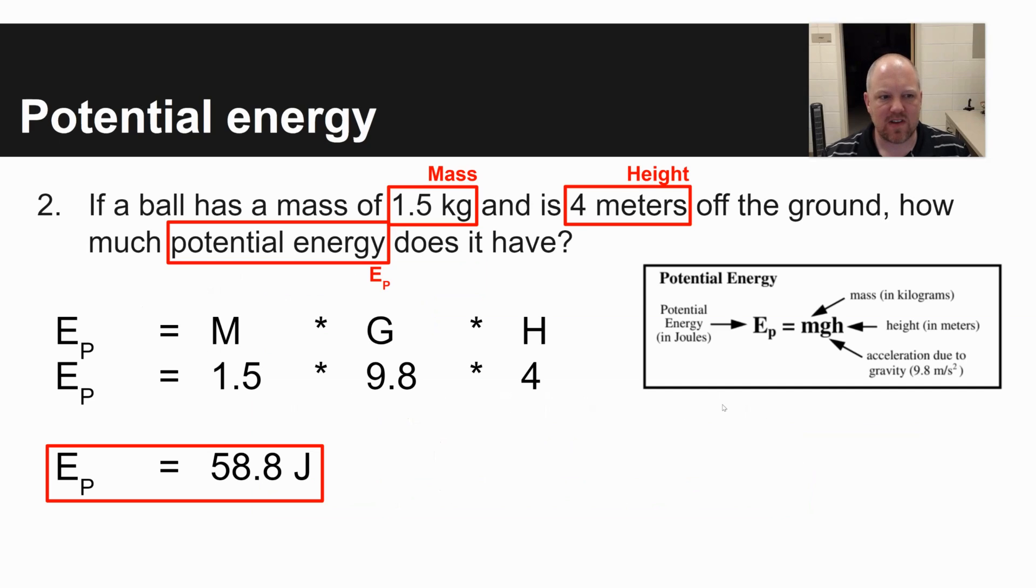Question number two, involving potential energy. It says, if a ball has a mass of 1.5 kilograms, is four meters off the ground, how much potential energy does it have? You're given mass, you're given height, and it's asking you to solve for potential energy. The one factor it doesn't give you is acceleration, and acceleration on Earth is always going to be 9.8 meters per second per second. So gravity, acceleration due to gravity is 9.8 meters per second per second.